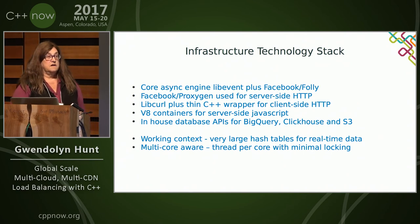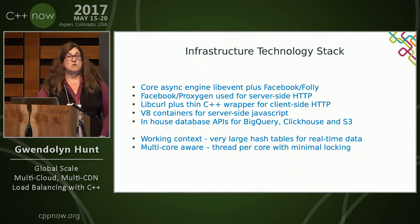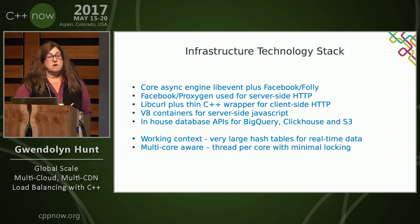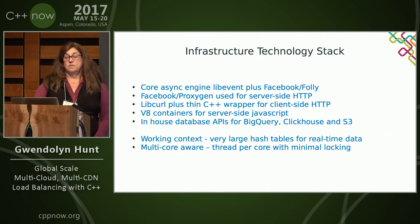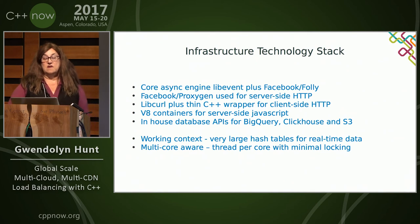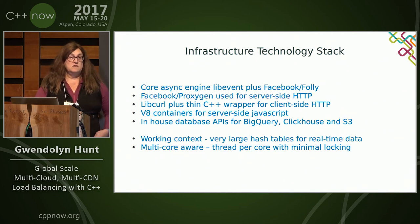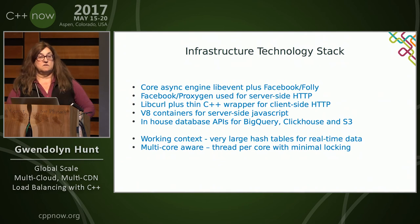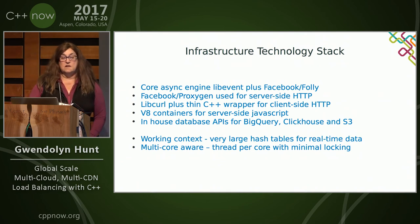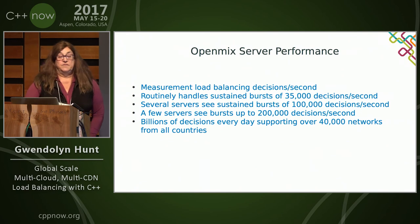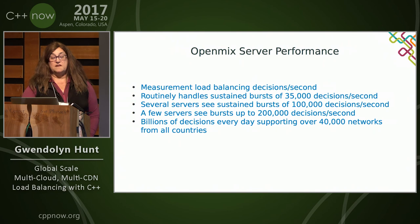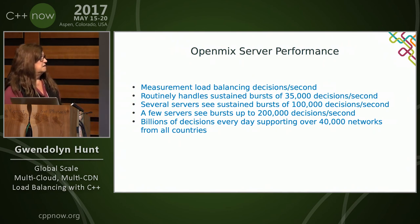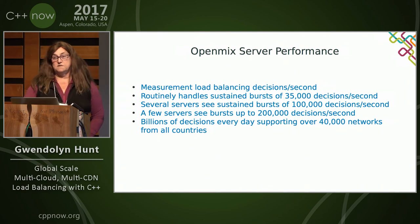In terms of working context, we have very large hash tables that span many gigabytes, which is for collecting all the score information from the real-time data. We're multi-core aware — generally one thread per core with minimal locking. The way we do that: every single thread has a complete copy of the full work context, so we consume a lot of RAM. We measure things and decisions by the second. Some servers typically do 35,000 decisions a second; we do see servers do 100,000, and we've got a couple that do 200,000 decisions a second — that's five microseconds.